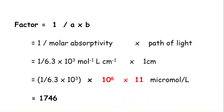Now let's calculate the factor. The factor equals 1/(a·B) as derived previously. Replacing the values: a is the molar absorptivity of NADH, which is the constant 6.3 × 10³, and B is the path length of light in solution, which is also constant at 1 cm. The centimeter units cancel each other, and we multiply by 10⁶ to convert from moles to micromoles.